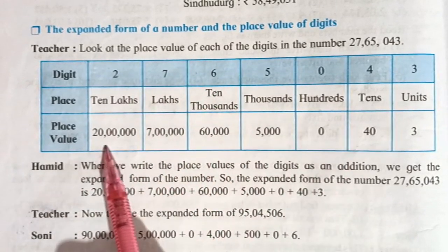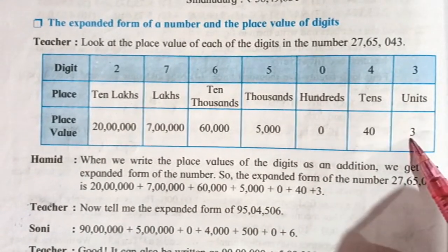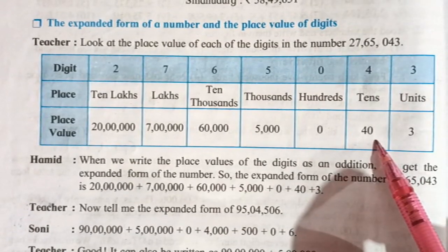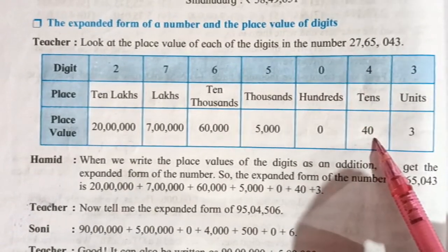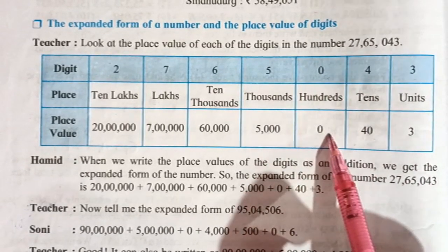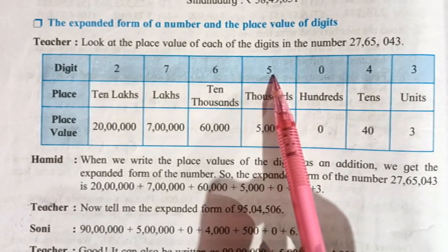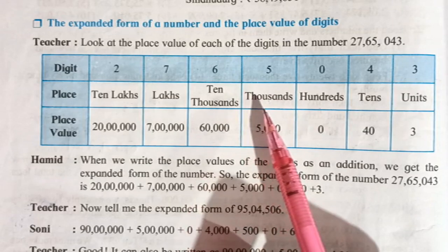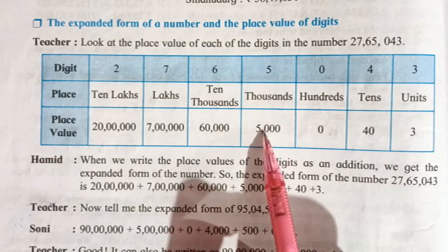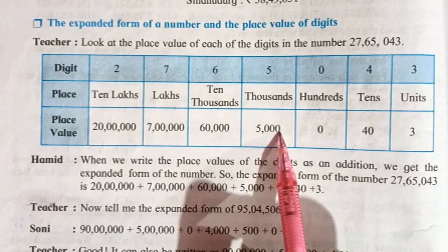So here now the place value: 3 is at units place, the value is the same as the number — 3. Tens place — you have one zero, so 4 becomes 40. Hundreds place has two zeros, but since the number is 0, you write 0 only. Thousands place — 1,000 has three zeros, so 5 becomes 5,000. Ten-thousands place — 10,000 has four zeros, so that is 60,000.